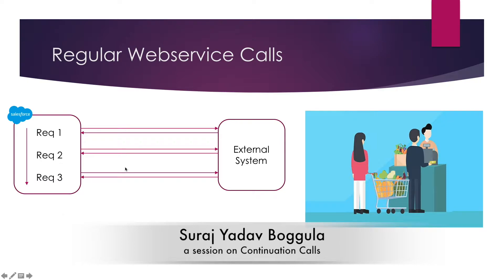For those new to web service calls, a good example is a supermarket. Imagine a billing counter where two people are standing one after the other. If there's only one billing counter, once the first person completes their entire billing and moves out, only then can the second person go. This is quite similar to our web service calls — they run one after the other, and parallel processing cannot happen.